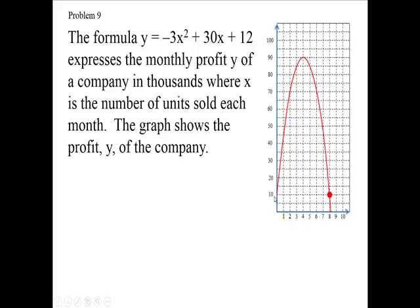So this is 10,000, 20,000, 30,000, 40,000, because it's in thousands. And 1 unit sold, 2 units sold, 3 units sold, 4 units sold, and so on. So this is your X, and up here is your Y.